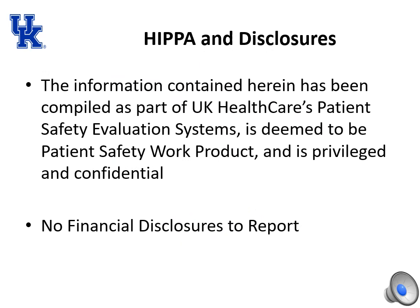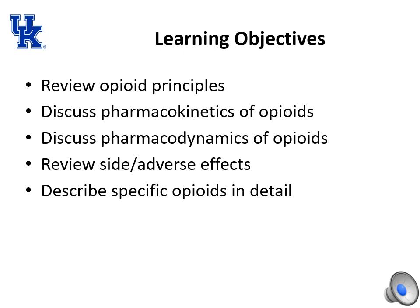HIPAA and disclosures: the information contained herein has been compiled as part of UK HealthCare's Patient Safety Evaluation Systems, is deemed to be patient safety work product, and is privileged and confidential. I have no financial disclosures to report. The learning objectives are to review opioid principles, discuss pharmacokinetics and pharmacodynamics of opioids, review side effects and adverse effects, and describe specific opioids in detail.